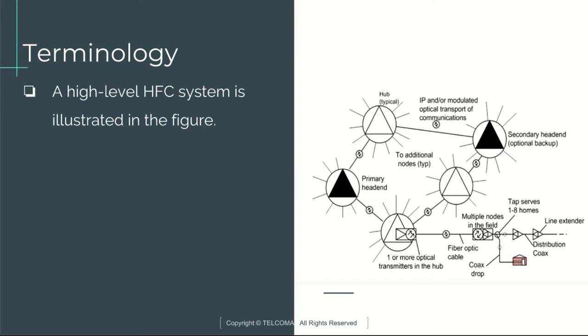RF amplifiers are usually needed to overcome signal loss. Each time a tap is used to remove some signal power to serve one or more homes, conservation of energy dictates that less power is available to go further downstream to other homes. The second mechanism is loss in the coaxial cable itself.